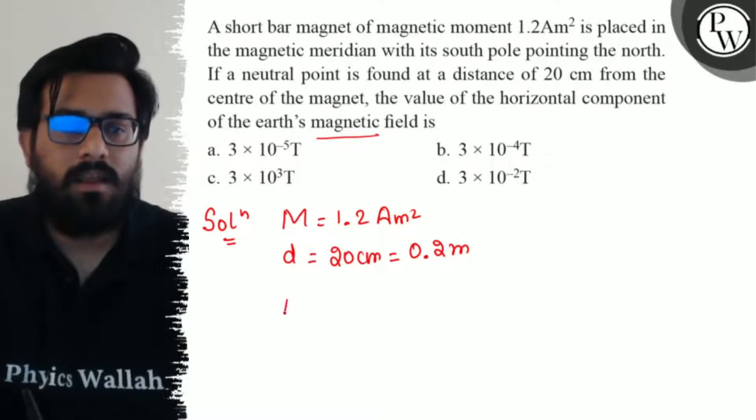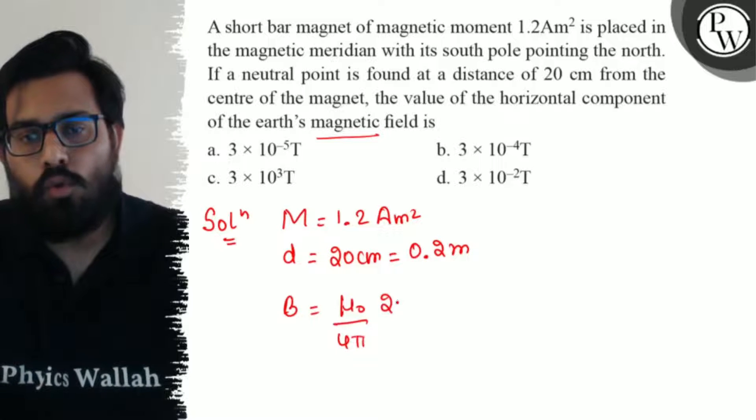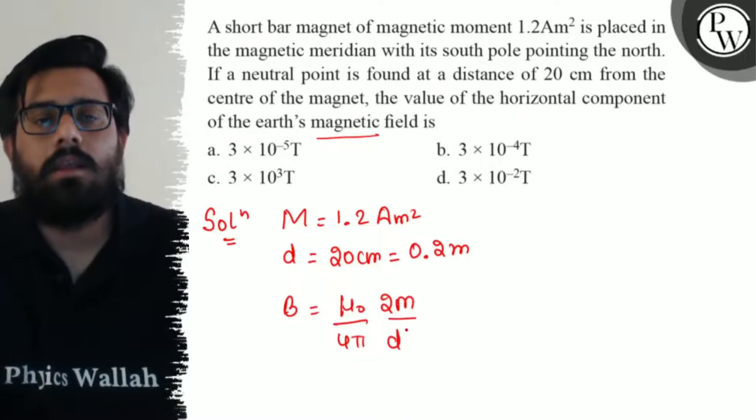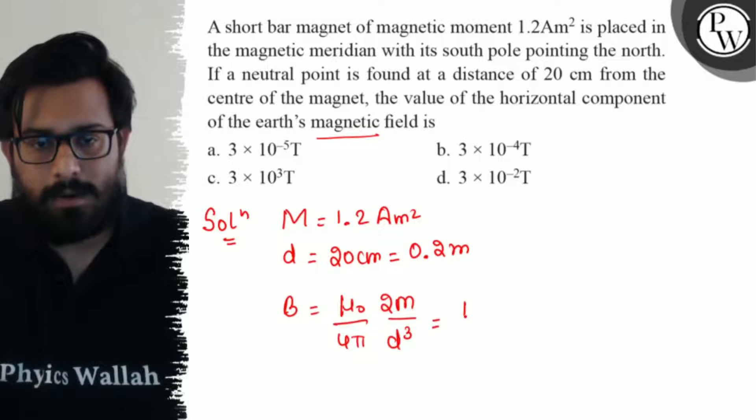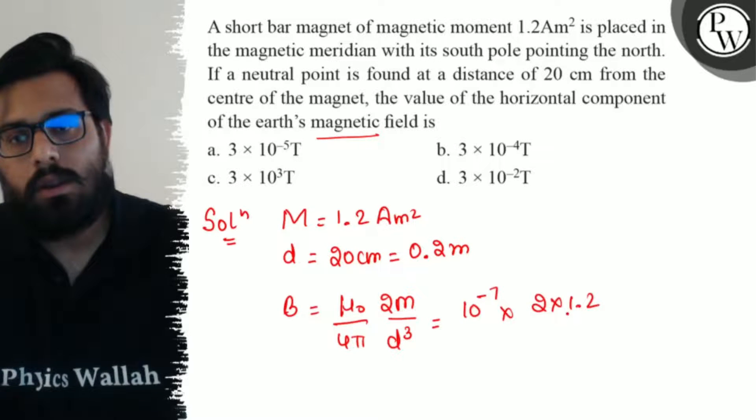It can be written as μ₀/4π × 2m/d³. Solving this part, so 10^-7 × 2 × 1.2 divided by 0.008.